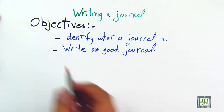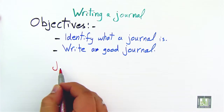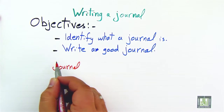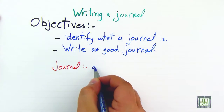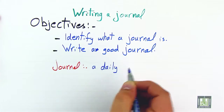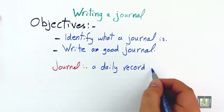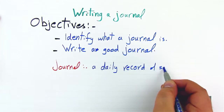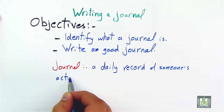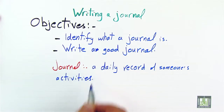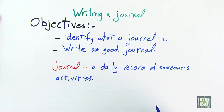First of all, what is a journal? We say that a journal is a daily record of someone's activities. It means what someone has done during the day, and it can also list things that you would like to do in the future.